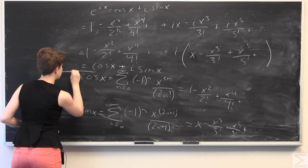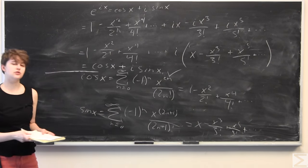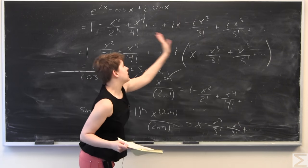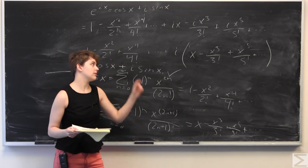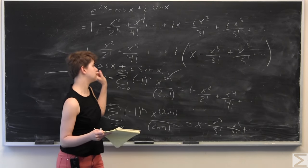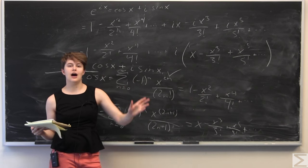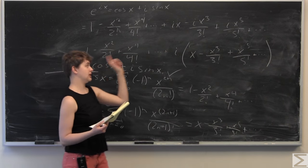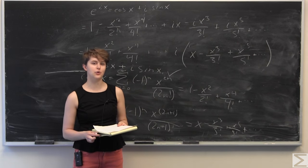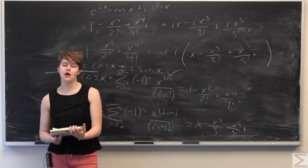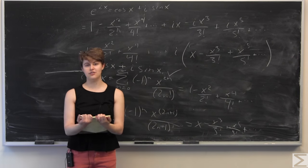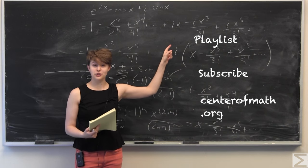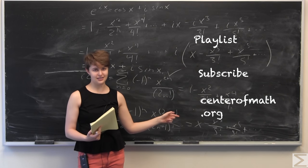We've used MacLaurin expansions to prove Euler's formula: starting from e to the z, plugging in z equals ix, distributing and simplifying powers of i, grouping like terms, and factoring out i — we recover exactly the MacLaurin expansions for cosine of x plus i sine of x. There are many other proofs, so if you have interesting ideas, let us know in the comments. See our playlist for more Problems of the Week, subscribe at our YouTube channel, and visit us at centerofmath.org. Thank you for watching.